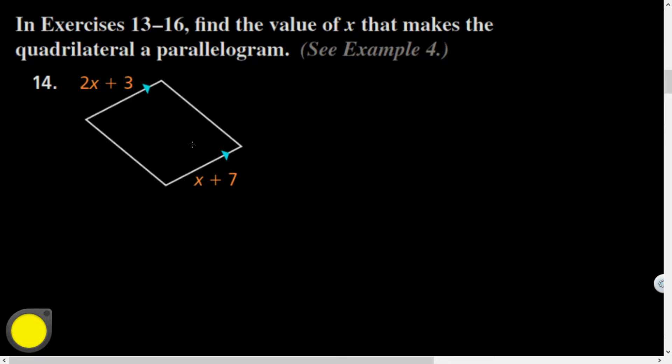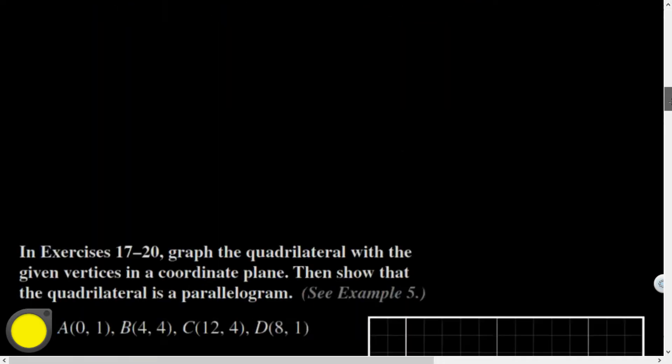All right, for this one, these are parallel, and if they were also congruent, then it's a parallelogram by the opposite sides, parallel, and congruent theorem. So I'm going to say, when 2x plus 3 is equal to x plus 7, subtract x from both sides, x plus 3 equals 7, subtract 3, x equals 4. That is when that would be congruent by the opposite sides, parallel, and congruent theorem. Good stuff.